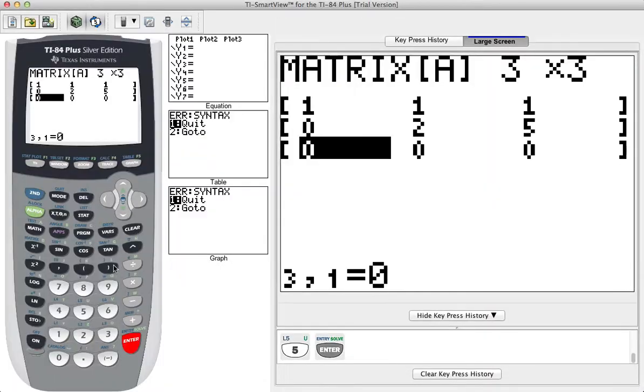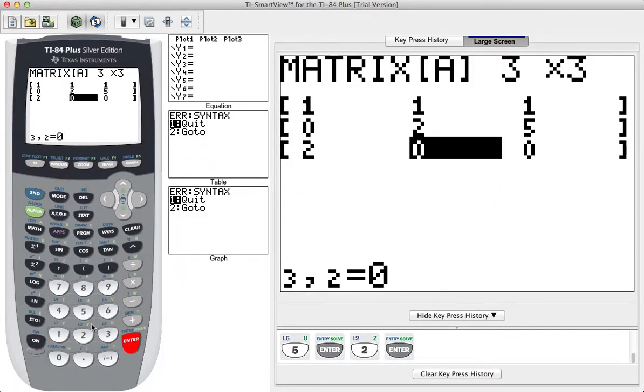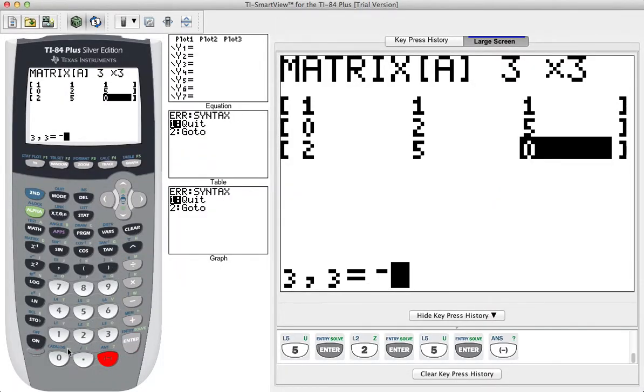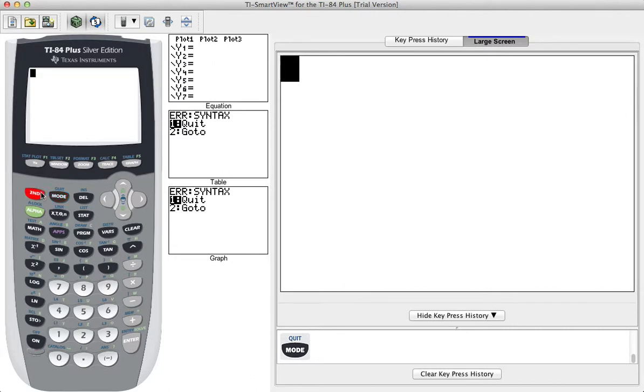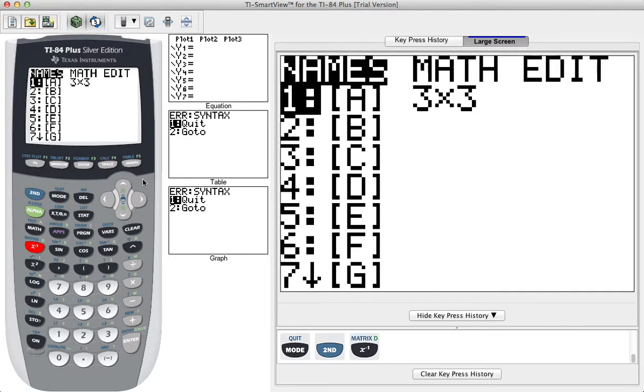My last row is 2, 5, negative 1. This is my matrix A, so now I can quit out of this menu. Open up the matrix menu again.